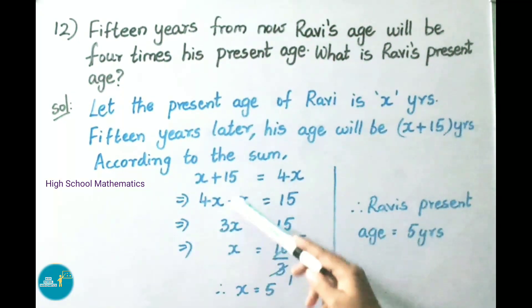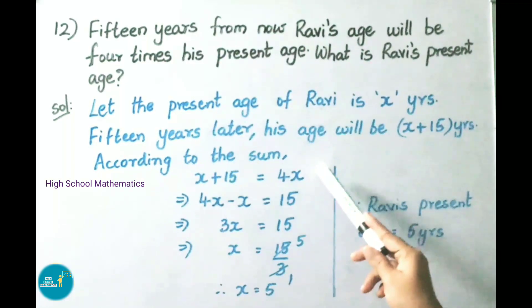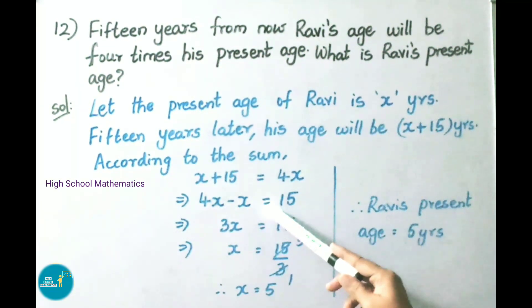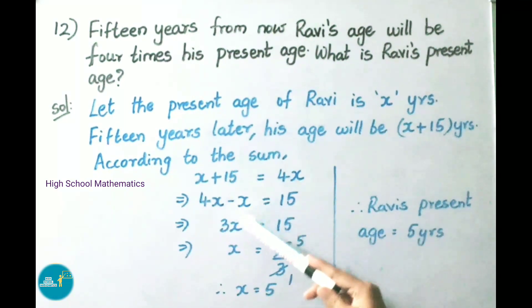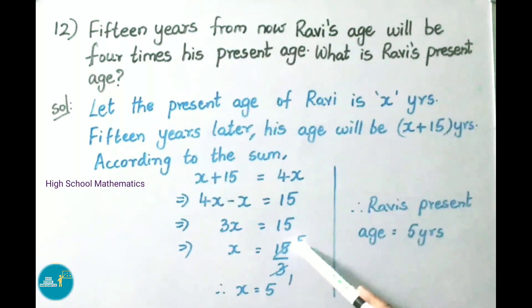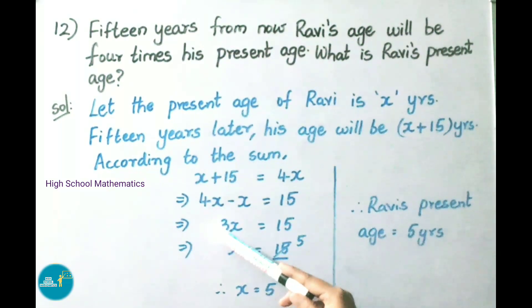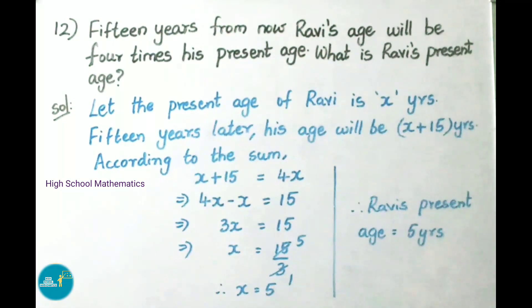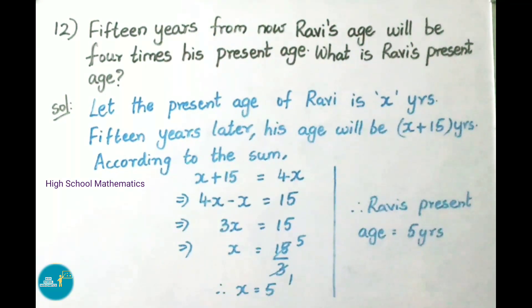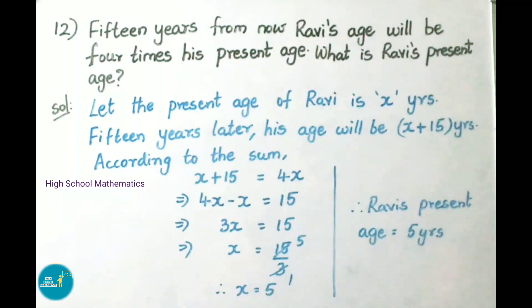Transposing x to the right side, it becomes minus x. So 4x minus x equals 15, that is 3x equals 15. Therefore x equals 15 divided by 3. 3 times 5 is 15. Therefore we got x value as 5. Ravi's present age is 5 years.